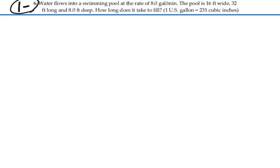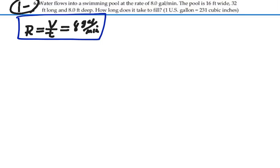We're given the rate. Rate is equal to volume per time, and we're told that is 8 gallons per minute. So if we rearrange this equation, volume is equal to the rate times the time. And equally, we could say that time is equal to the volume divided by the rate. That's the one we want, because we want to find out the time it takes to fill the swimming pool.